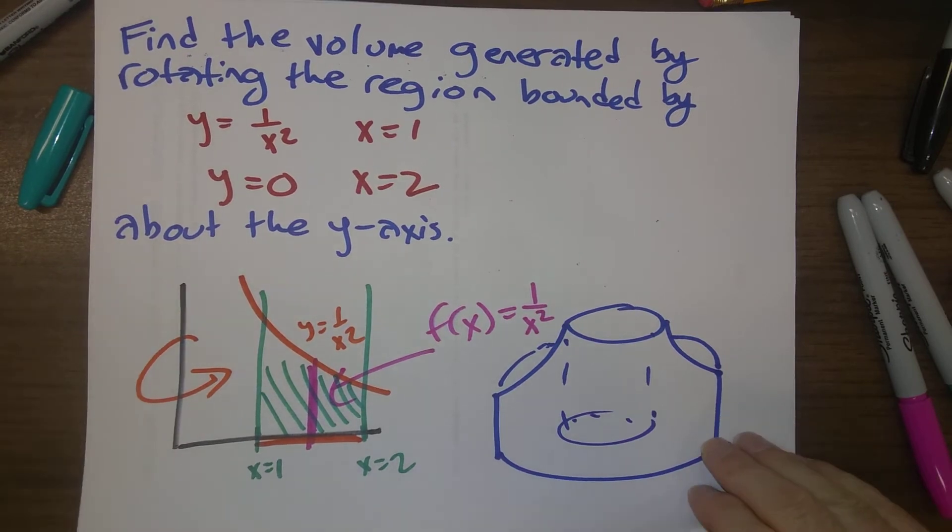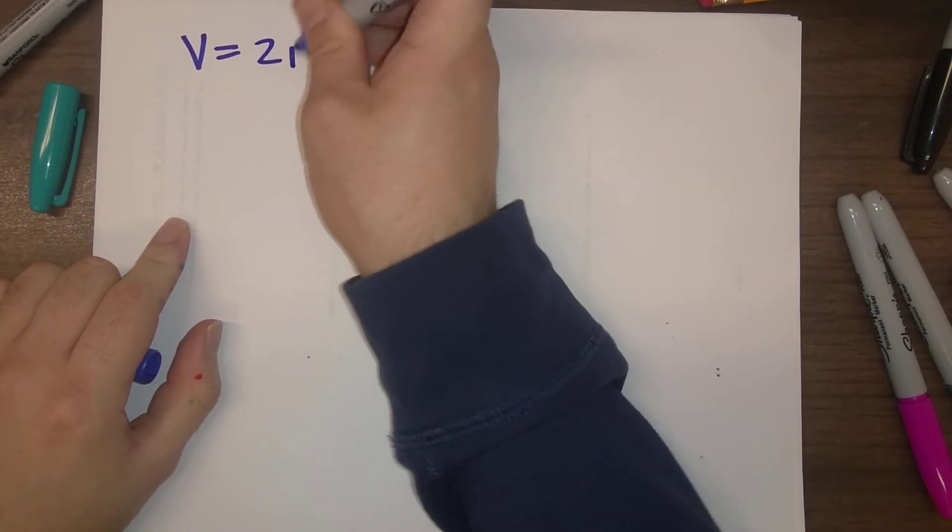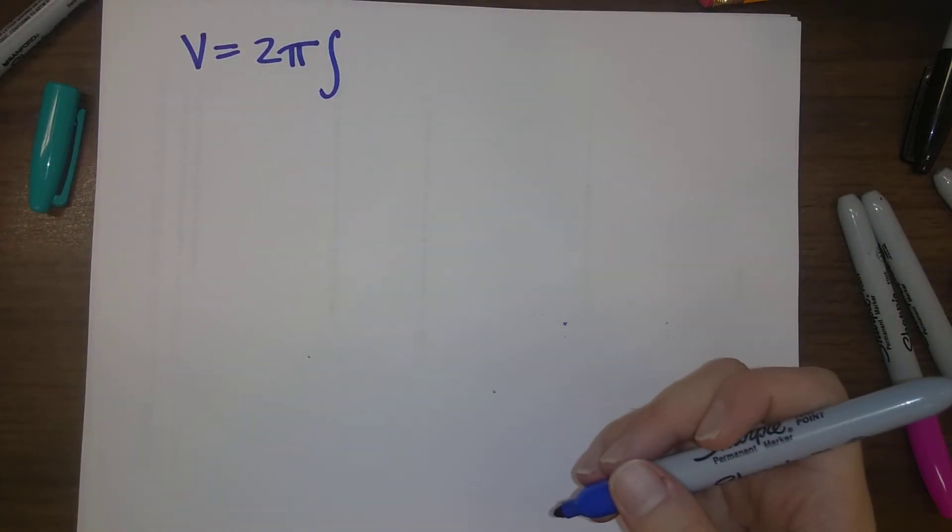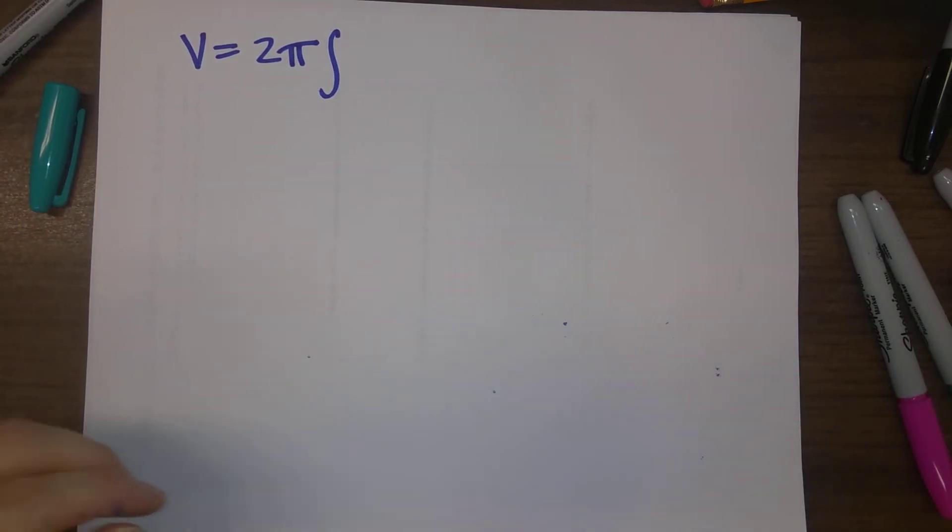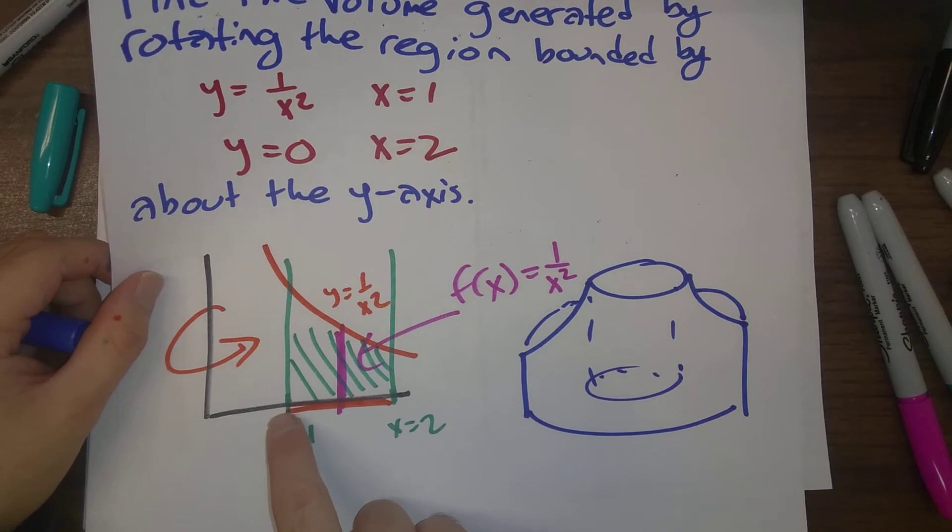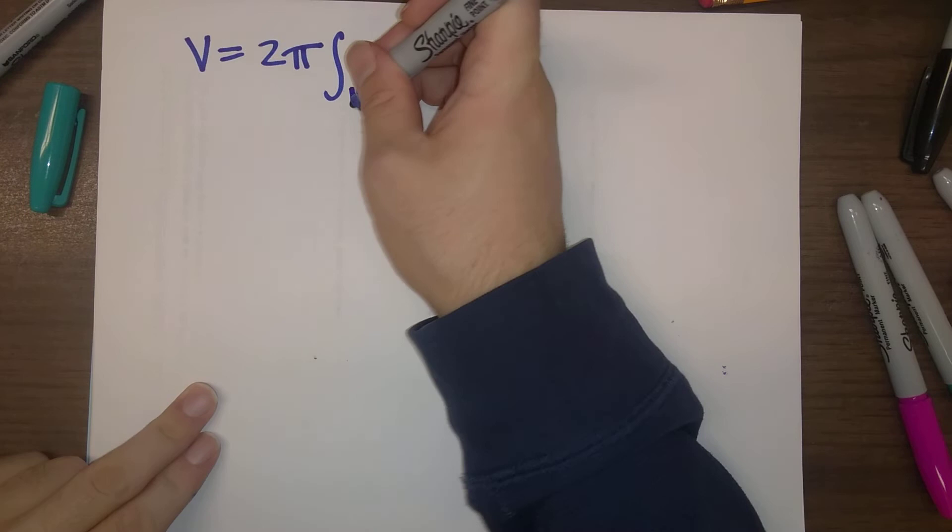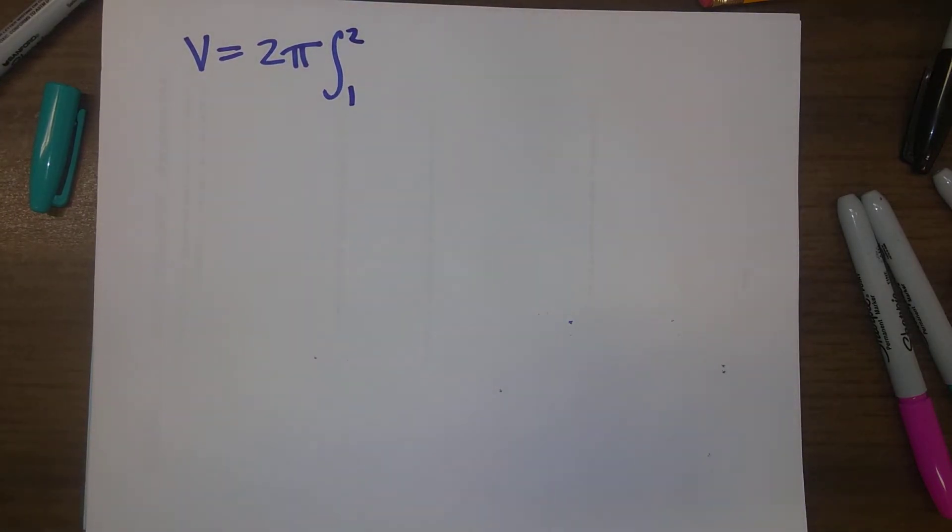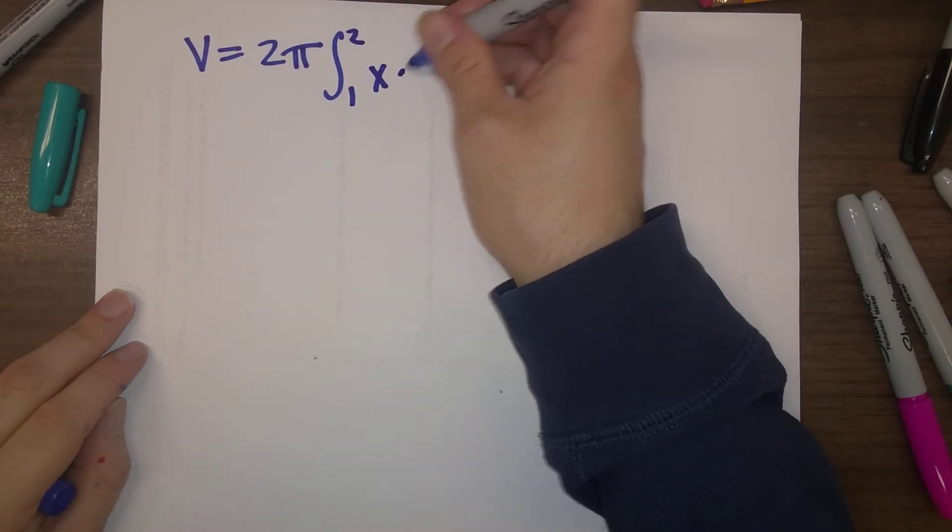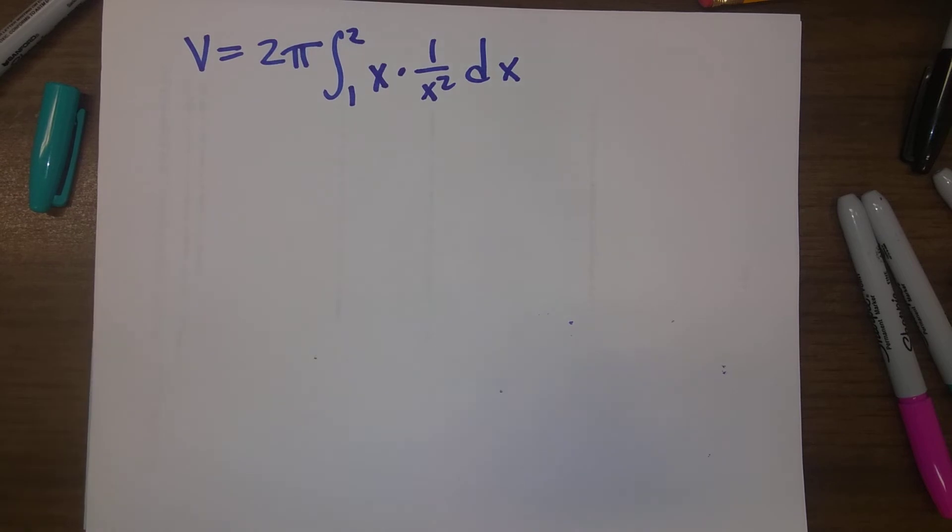So when we go ahead and write down the formula that we want to have here, V equals 2π times the integral from a to b. Well, the region that we're integrating over is x running from 1 to 2. So those are the bounds here for our integral. x times f(x), we just said, was 1 over x squared. And so this is the integral we have to evaluate.